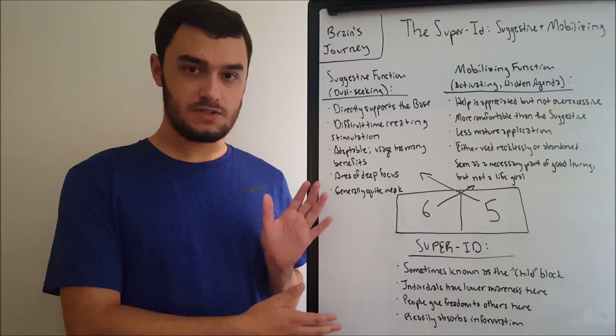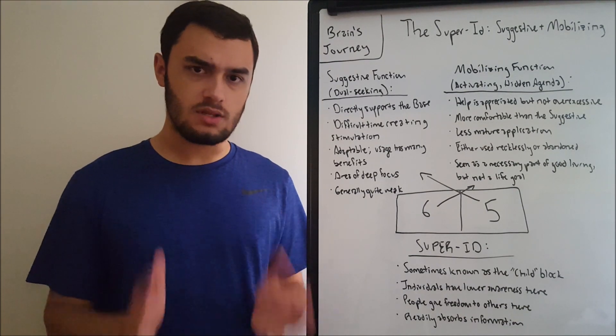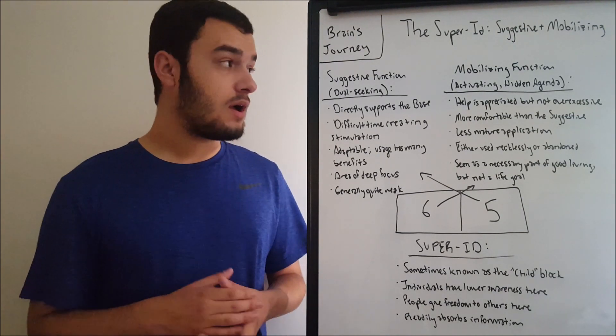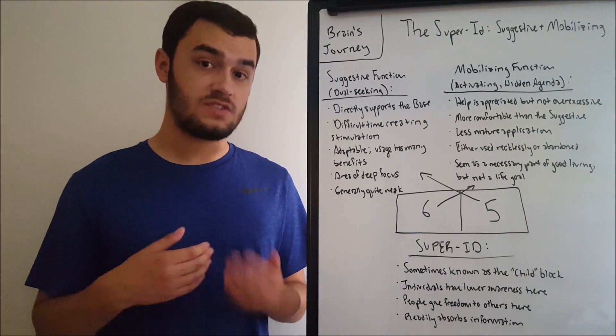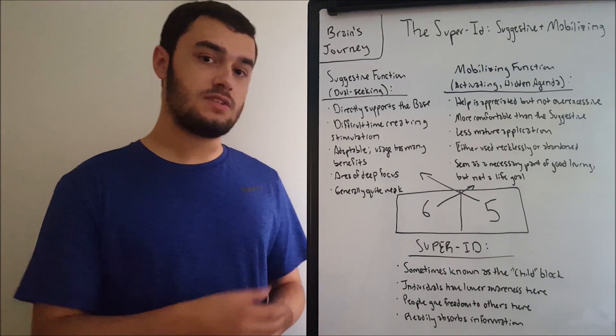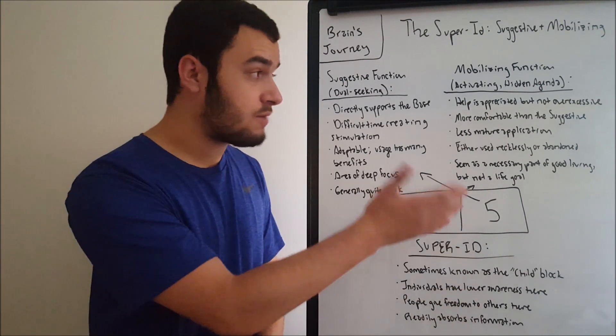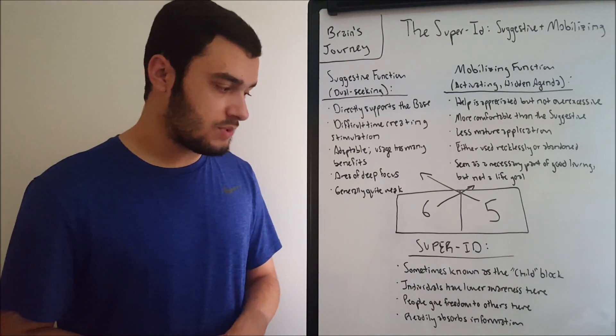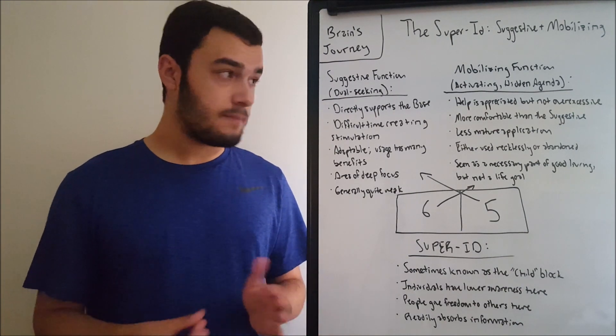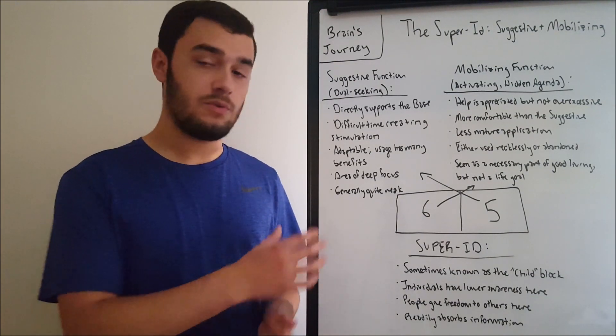Another point is that the individuals have limited awareness here. They're not as aware of their weaknesses unless they're pointed out. Generally something that people will not think about too much, but engage in nonetheless. And so if attention is brought towards the individual regarding these functions, they may see it as valuable. But for the most part, they're just kind of passive goals that we strive towards for ourselves that we're not thinking about too much. And as well as that, people give freedom to others here. We were talking about the suggestive, how people will come into our lives, give us the stimulation that we need to engage in purposefully, the mobilizing, how we can receive help here. It's a weak area. So the super id is generally an area where other people will give us help. We don't as much trust our own ability to solve problems here. Because it's weak, it's a weak area. And we don't often have too much freedom here. We give the freedom to the other people to decide how we go about operating these functions.